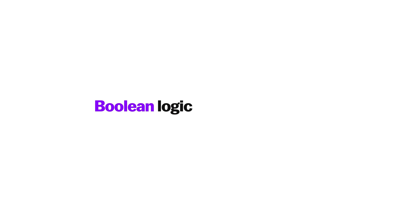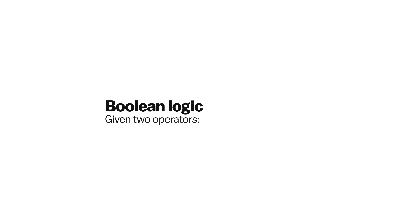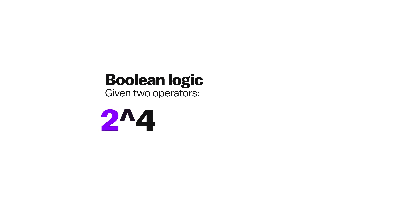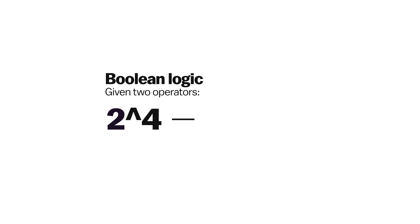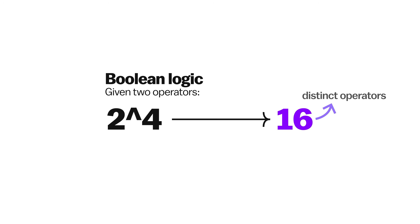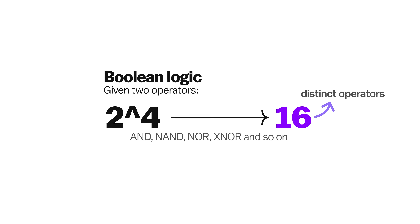But about those complex functions: in Boolean logic, given two operands, we have 2 to the power of 4 — so 16 distinct binary operators — like AND, NAND, XOR, XNOR, and so on.